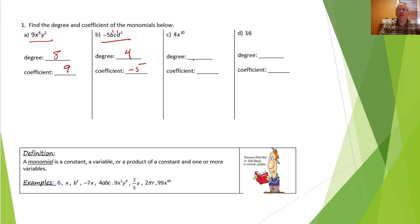For this monomial there's only one variable and one exponent. The exponent is 10 and the coefficient is 4. Remember that if you have a variable with no number in front, the coefficient counts as 1. How about this one? It's just a number or a constant, but that's a monomial too. The degree is kind of tricky — it doesn't have a variable, so we put degree 0.